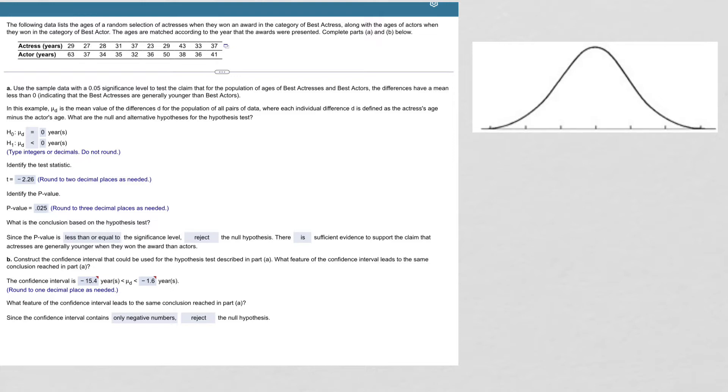We were told to find the differences of the ages by taking the ages of the actresses minus the ages of the actors. So I just put the actresses in L1, the actors in L2, and then I formed L3 by taking L1 minus L2.